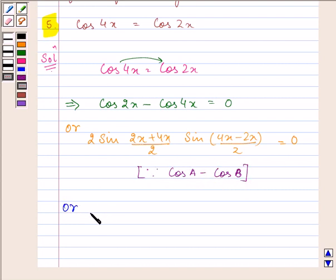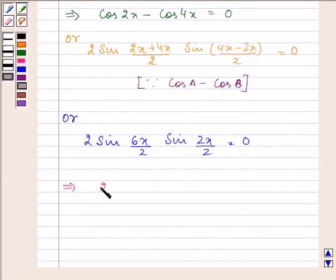Or we can simplify it and write it as 2 sin(6x/2) sin(2x/2) equals 0. Simplifying further, we have 2 sin 3x sin x equals 0. Now we have two possibilities.